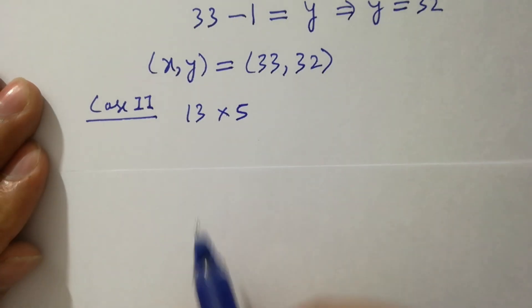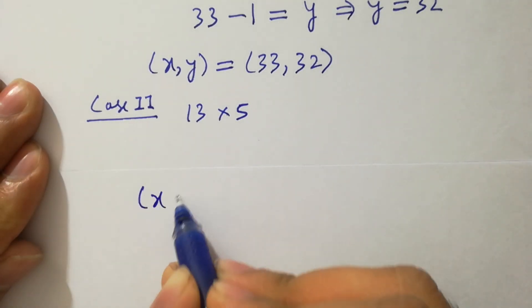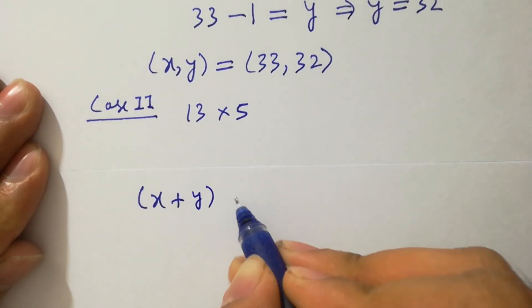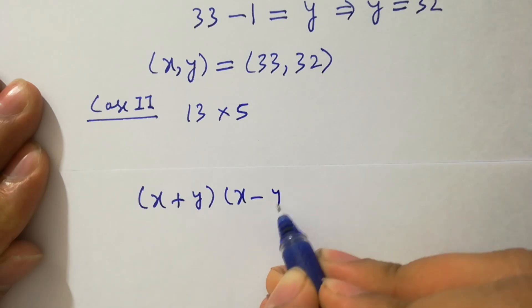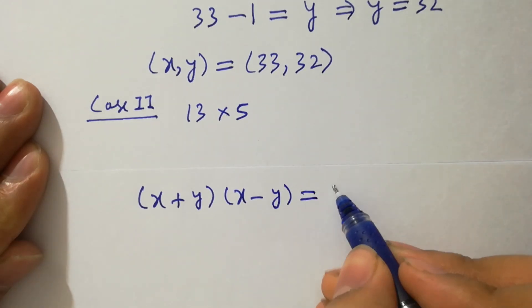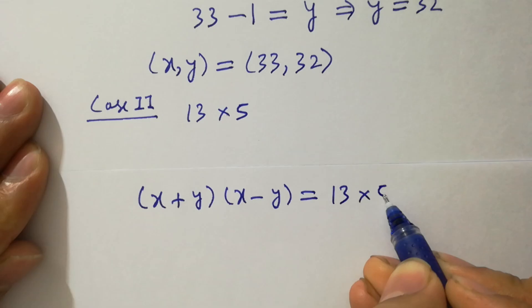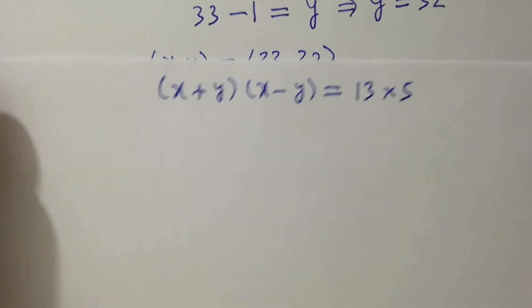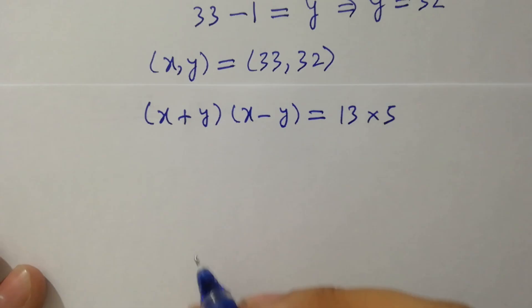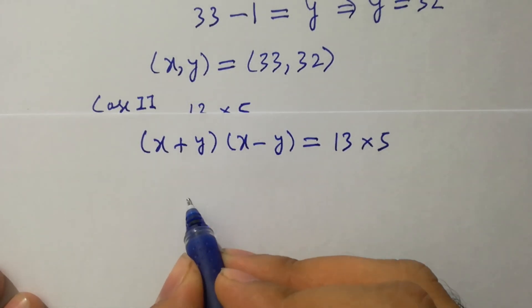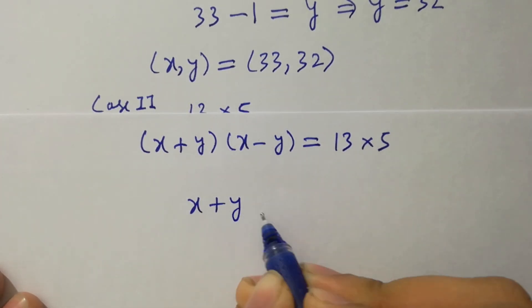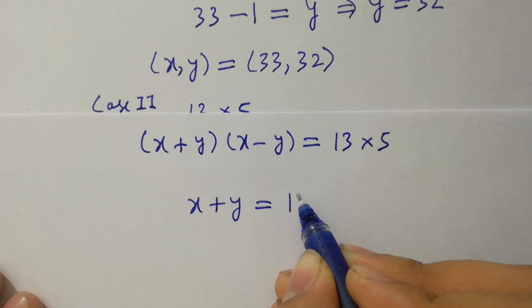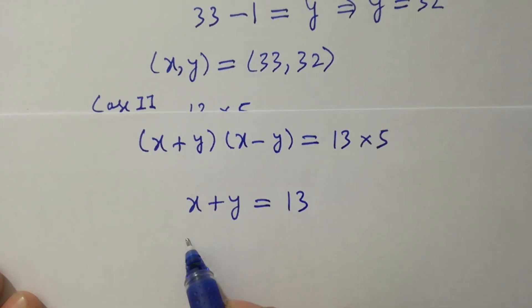x plus y, x minus y equal to 13 times 5. By comparing x plus y equal to 13, x minus y equal to 5. Add them.